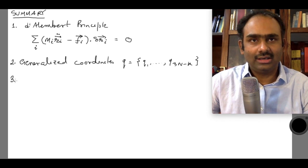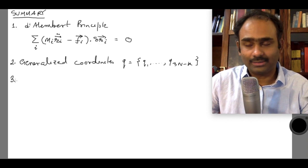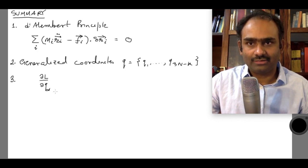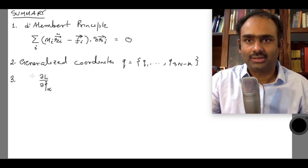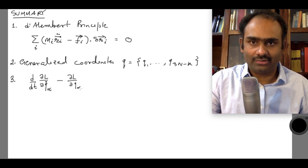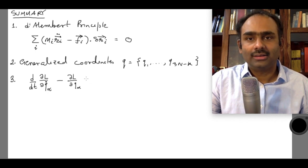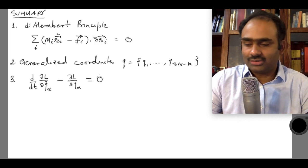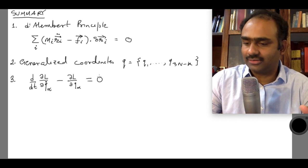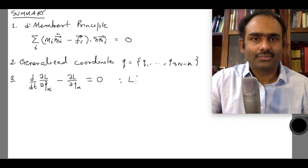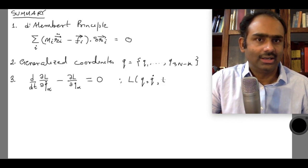Then we derived the Euler-Lagrange equations, which are the equations of motion describing the evolution of your system. They are: d/dt(∂L/∂q̇_alpha) − ∂L/∂q_alpha = 0, where this holds when all forces are obtainable from a scalar potential so that the forces are conservative. The Lagrangian is a function of generalized coordinates, generalized velocities (the time derivatives of q), and time t.